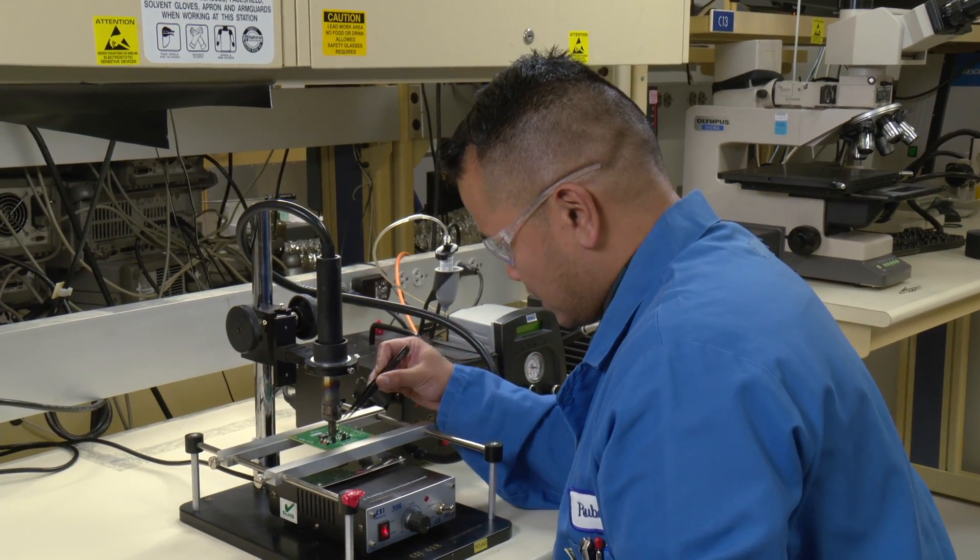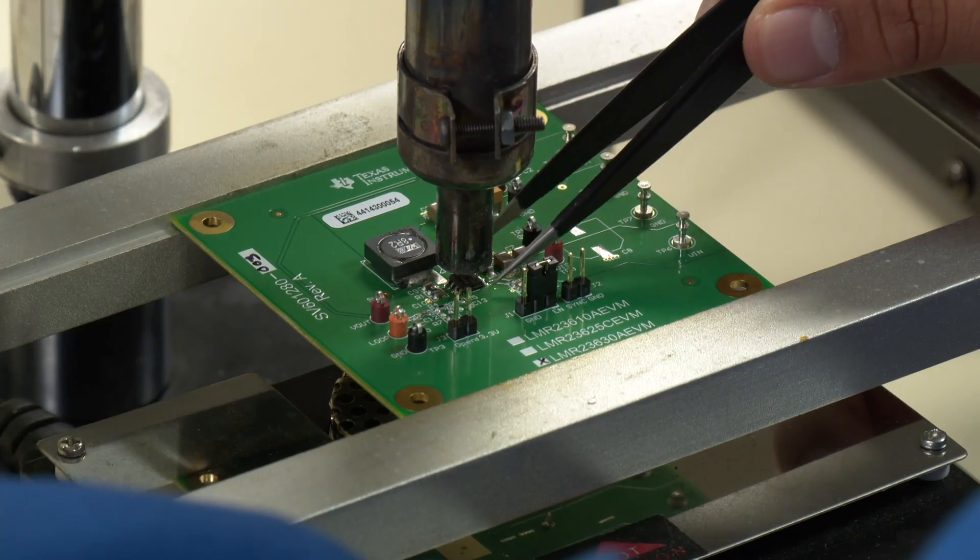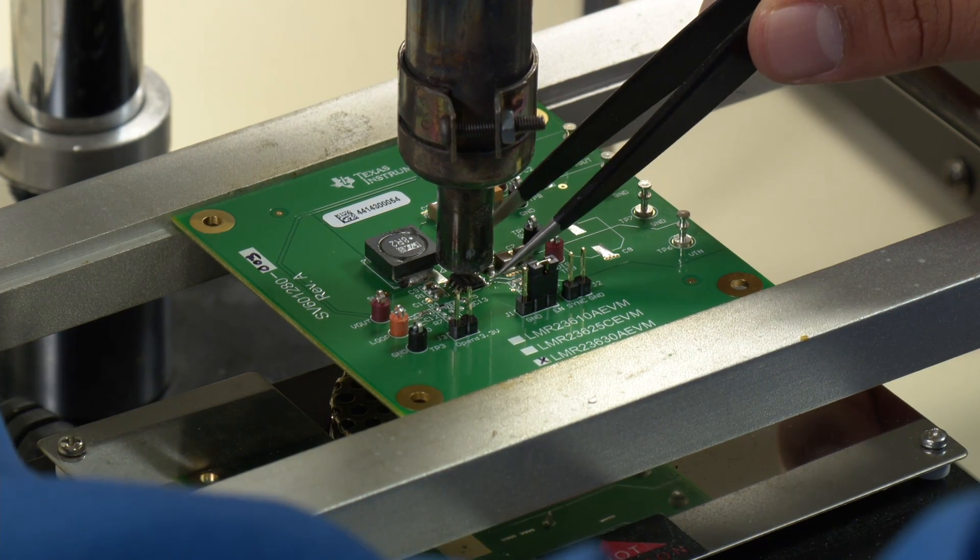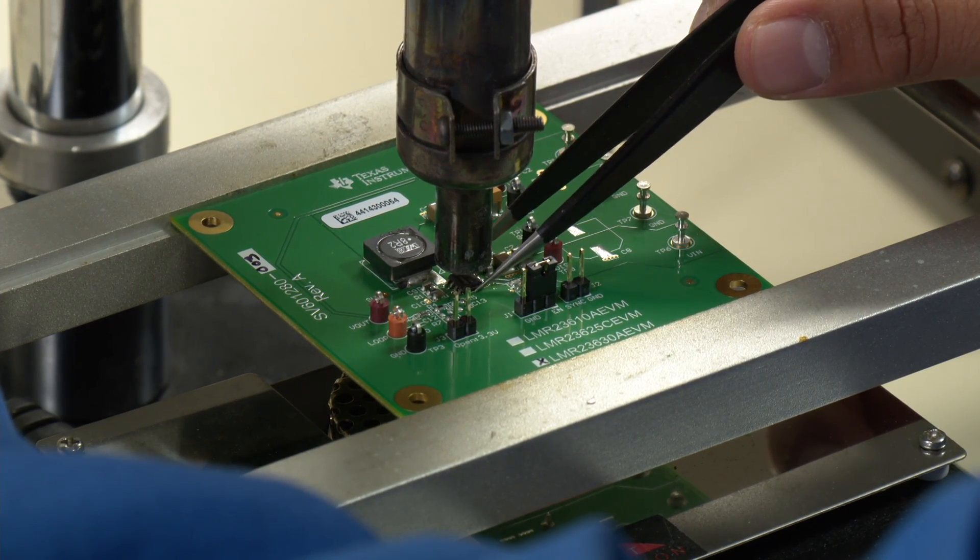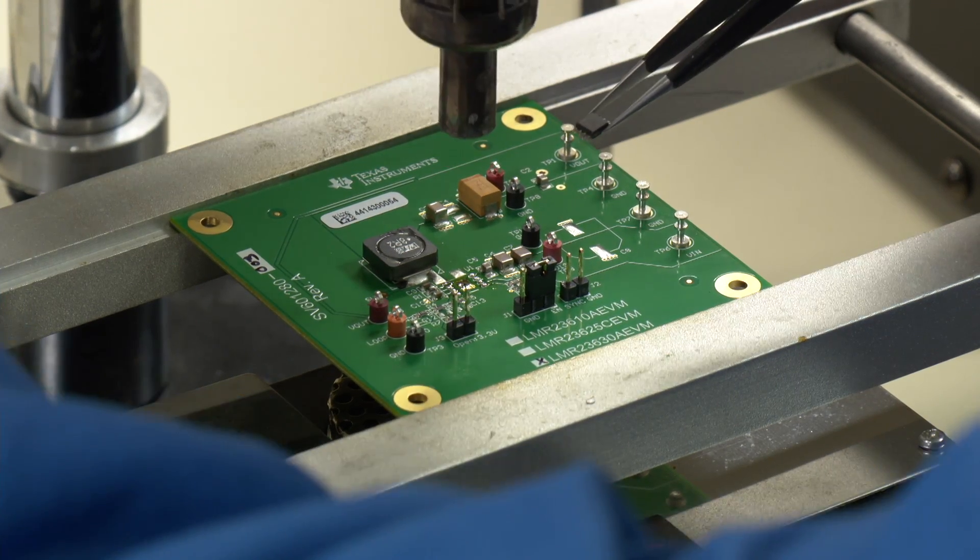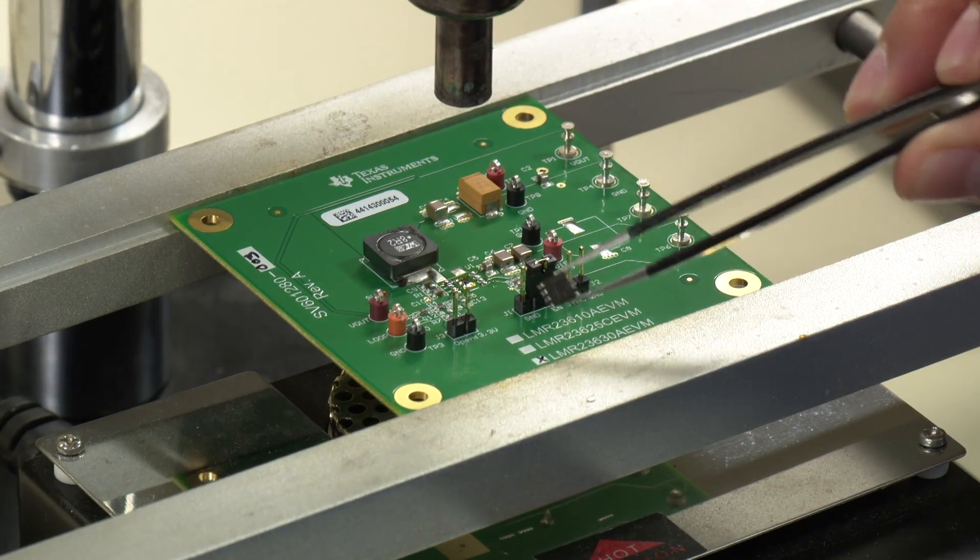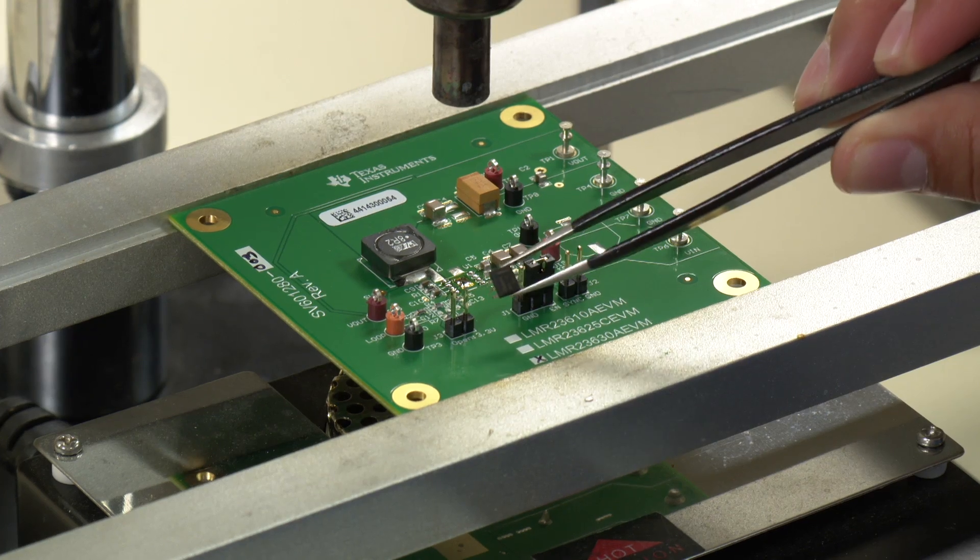So after that time has elapsed, I'll take my tweezers. So as you see, the solder has liquefied. I can take it off. And there you have it. I have successfully demounted an SOIC.